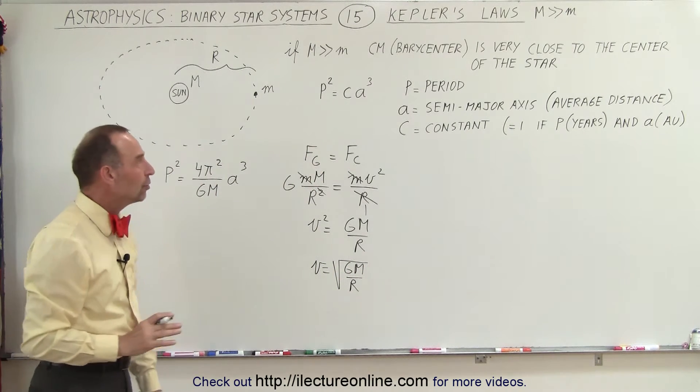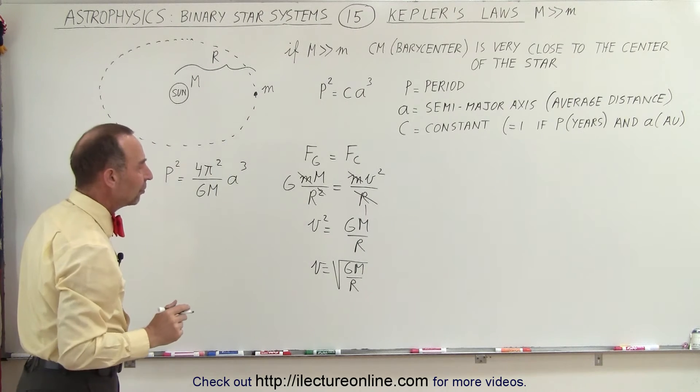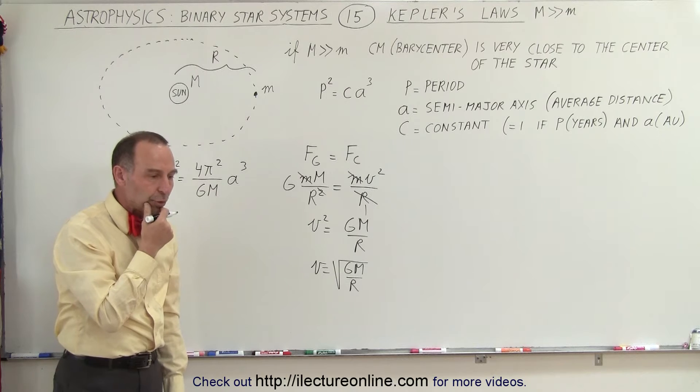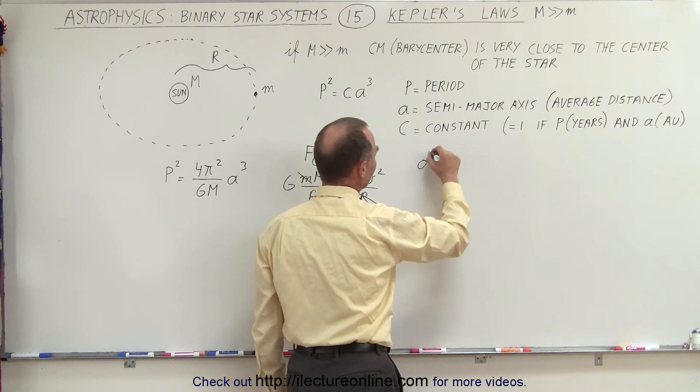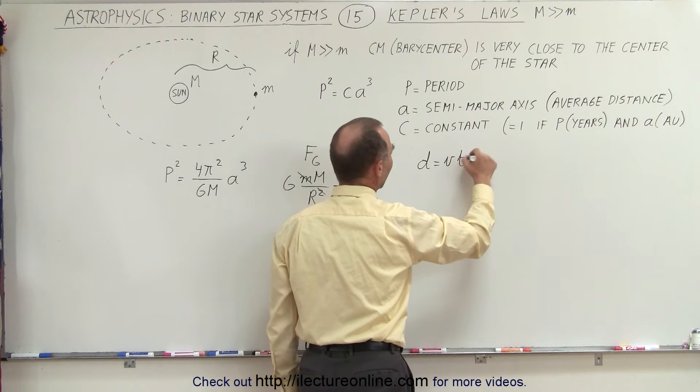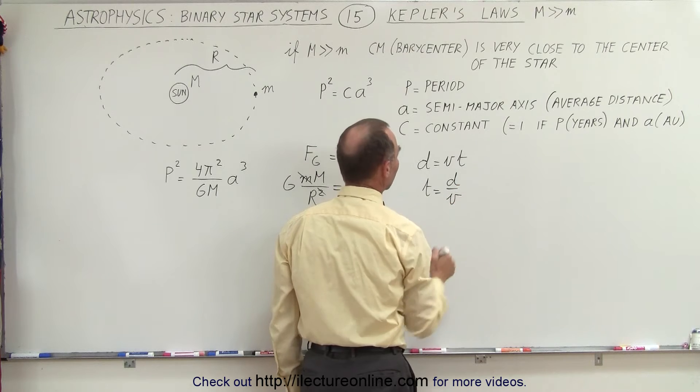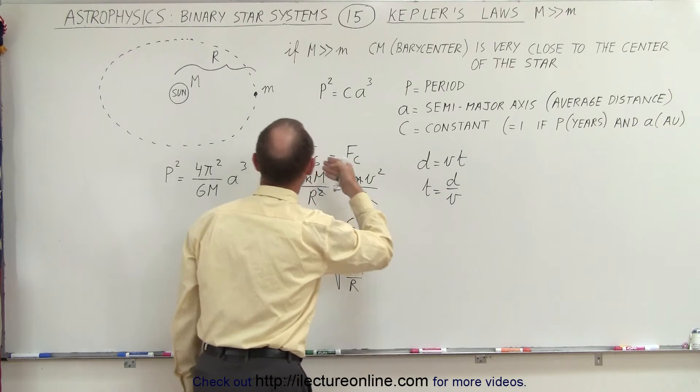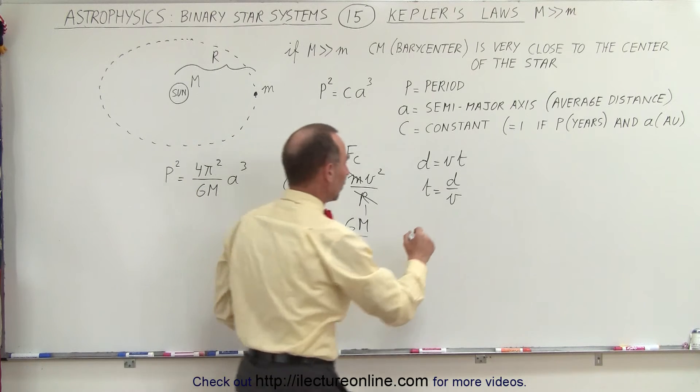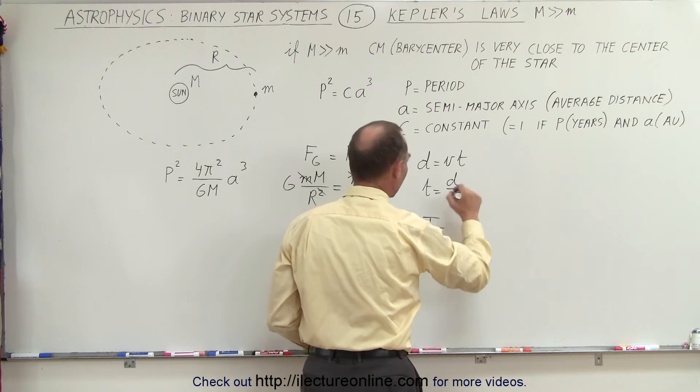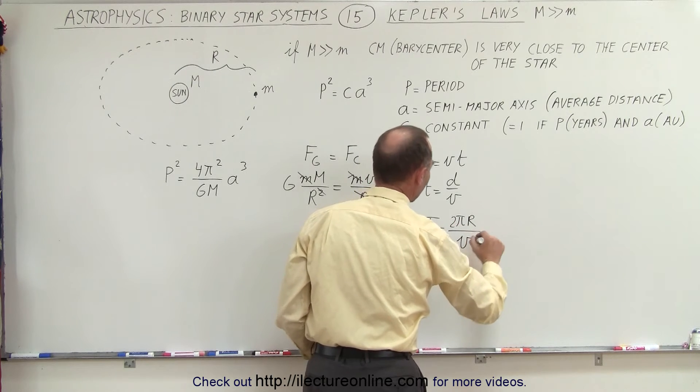The next thing we're going to do is take a look at the orbit of the planet and relate that to how long it would take. We have the equation that distance equals velocity times time, and that means that time equals distance divided by velocity. In this case, when we have the planet, the time for one particular orbit would be the period. So the period is equal to the distance, which is 2πr divided by the velocity.